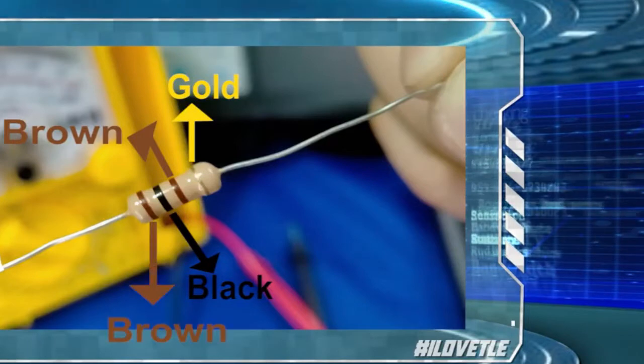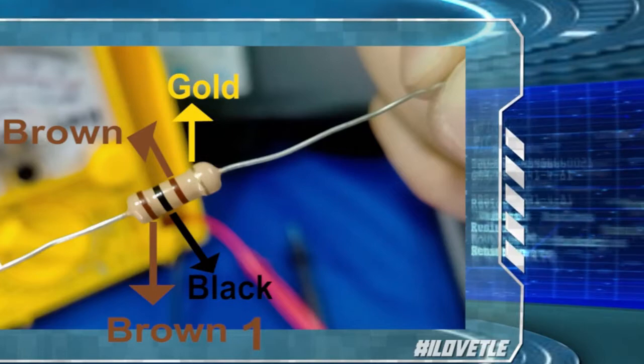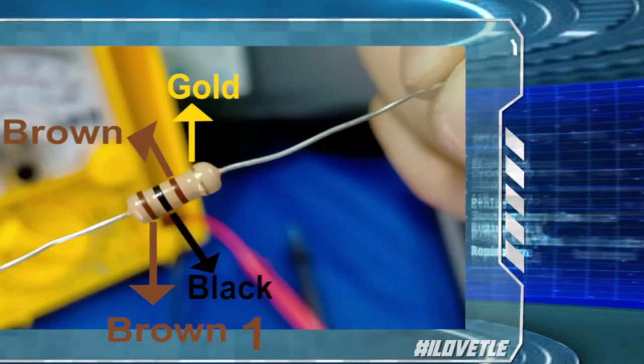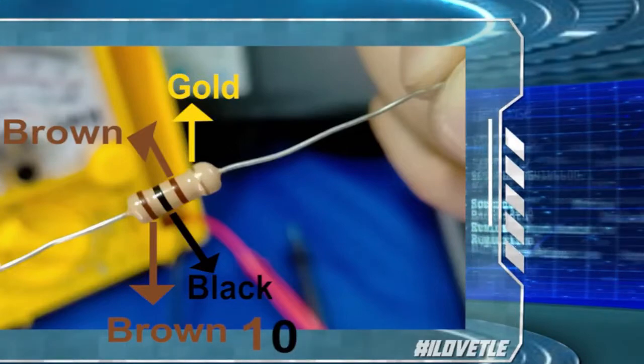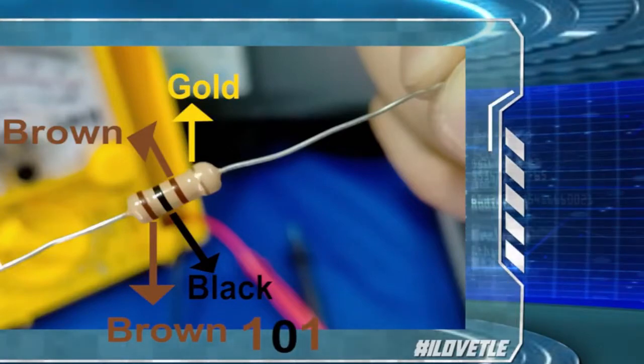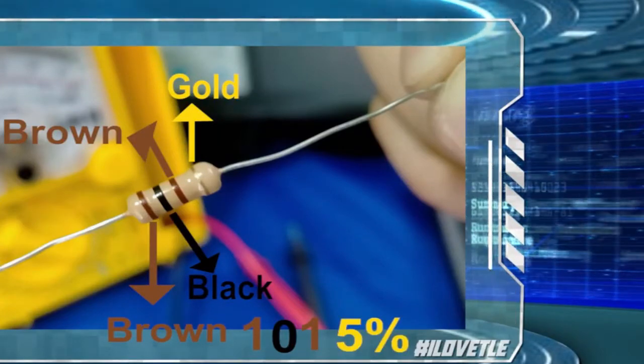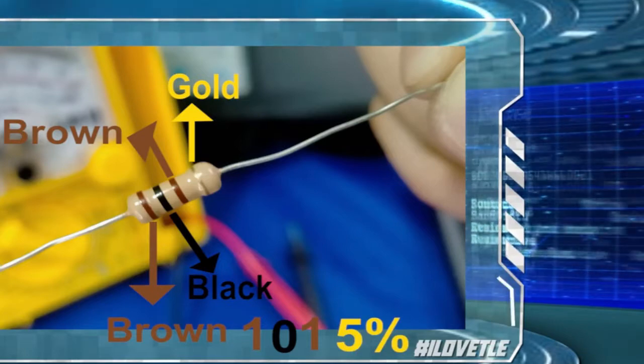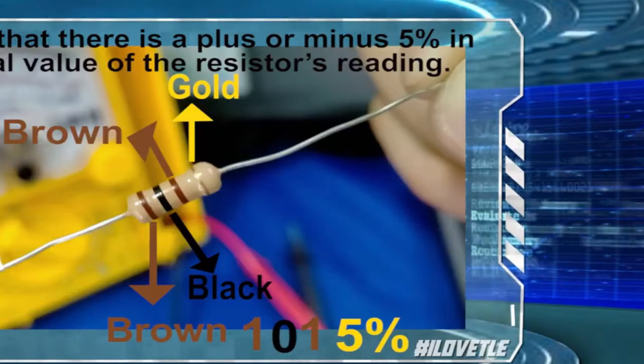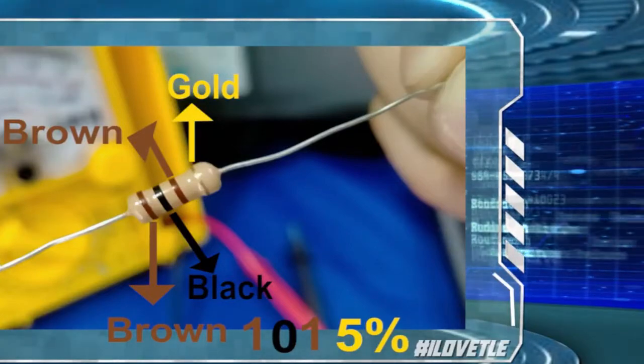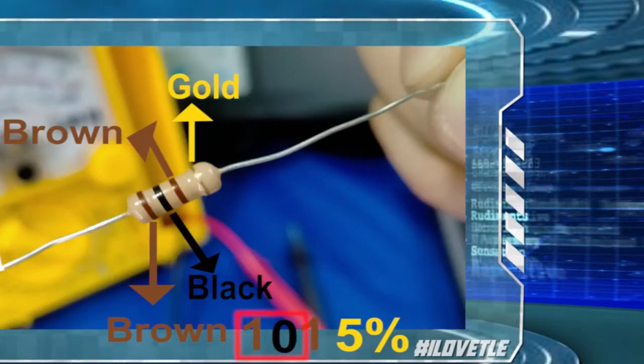Following the color codes, the first significant figure is brown and has a value of 1. The second significant figure is black and has a value of 0. And the third color is brown which is the multiplier and has a value of 1. And the color gold has a value of 5%. The color gold stands for the tolerance band. Again, it means that there is a plus or minus 5% in the total value of the resistor's reading.